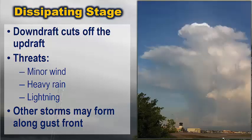In pictures, the dissipating stage has a thin, icy look — especially on the edges — almost as if the storm is fading away, which is exactly what's happening. If you were to continue the picture off to the right, you'd likely see a developing cumulus or even mature stage happening elsewhere, while the left portion of the image shows the dissipating stage.